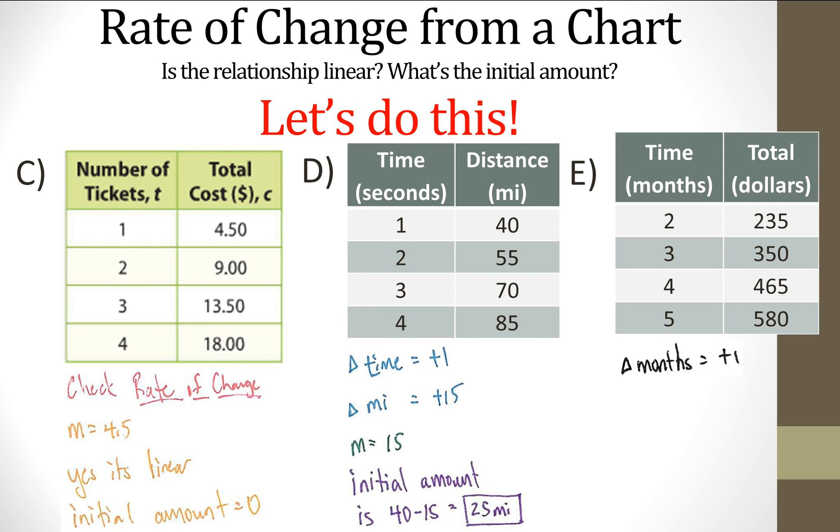For E, the month is increasing by one and the dollars is increasing by 115. So I know my rate of change is 115. And it is linear. So then I need to go back two times because this is at two. So I go back once and do 115 and then 115 again, which is how I got to 230. And 235 minus 230 is five. That's my initial amount.